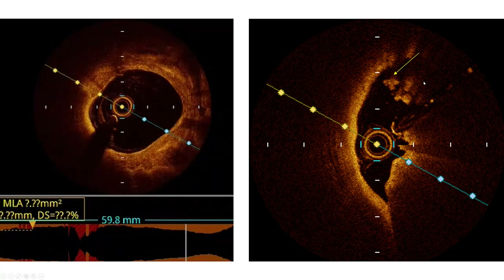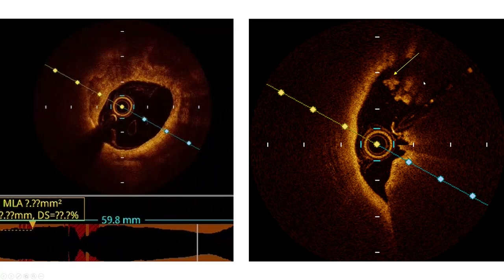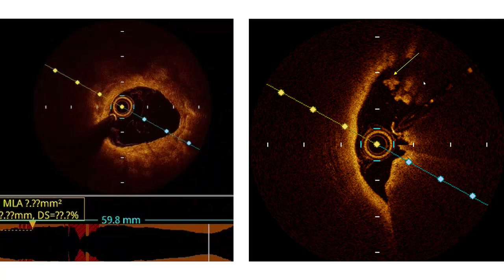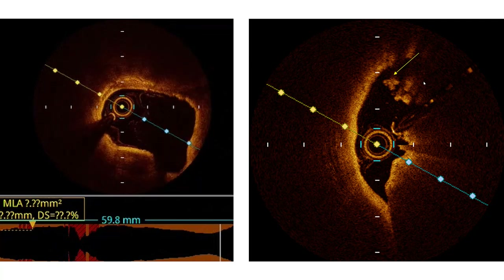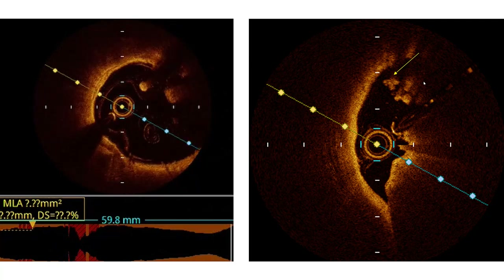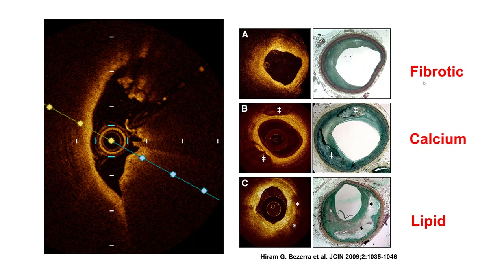So OCT did help make the differentiation, showing that actually the patient did not have calcium causing the filling defect, but it was actually thrombus. And this is to differentiate with calcium: calcium usually has sharp borders, and unlike lipid, calcium actually lets the light go through, so we can see the sharp borders both proximal and distal to the calcium.